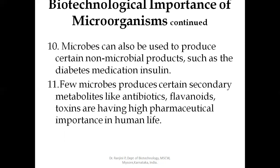Few microbes produce certain secondary metabolites like antibiotics, flavonoids, and toxins, which have high pharmaceutical importance in human life. These microorganisms produce such metabolites in very low concentration to overcome extreme environmental conditions or the absence of nutrients. These secondary metabolites include antibiotics, flavonoids, toxins, etc., and these microorganisms are exploited for the production of these secondary metabolites.